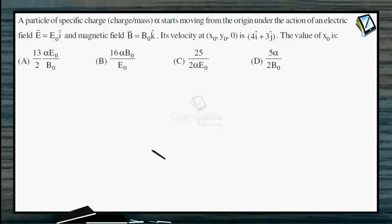A particle of specific charge, charge to mass ratio alpha, starts moving from the origin under the action of an electric field E equals E naught i cap and magnetic field B equals B naught k cap. Its velocity at x naught, y naught, 0 is 4 i cap plus 3 j cap.